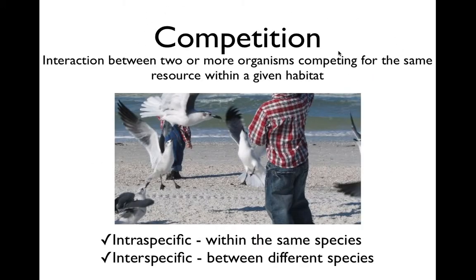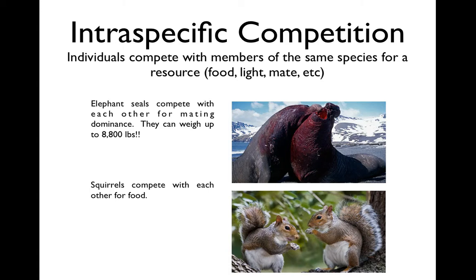The third major type of biotic relationship is competition. This interaction is between two or more organisms competing for the same resource within a given habitat. There are two types: intraspecific, which happens within the same species, and interspecific, which happens between different species. For intraspecific examples: elephant seals compete with each other for mating dominance and can bloody each other up. Squirrels compete with each other for food and even habitat.